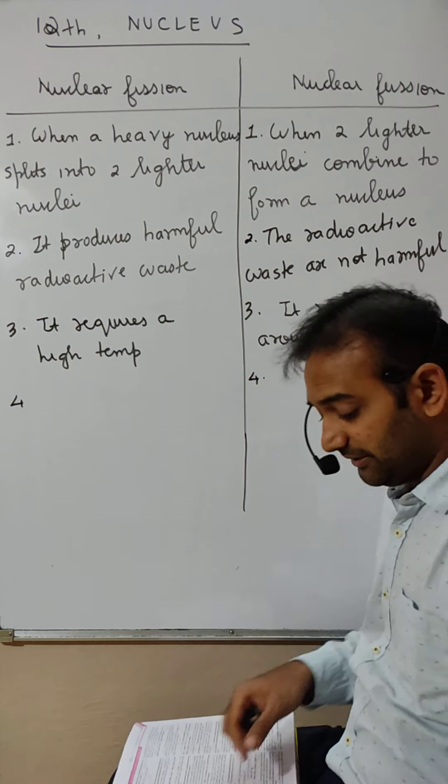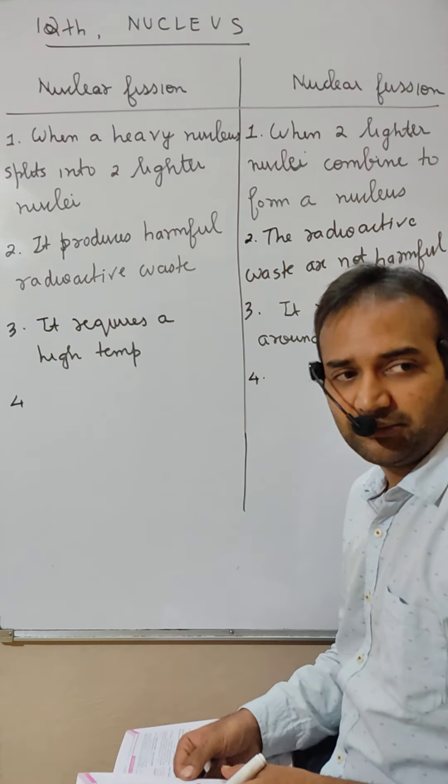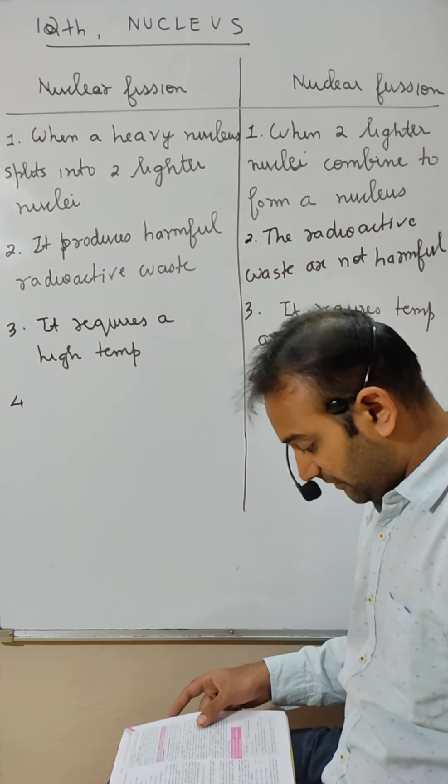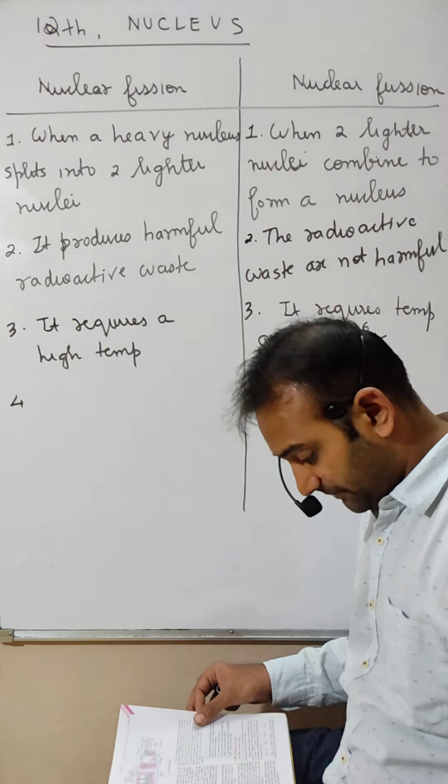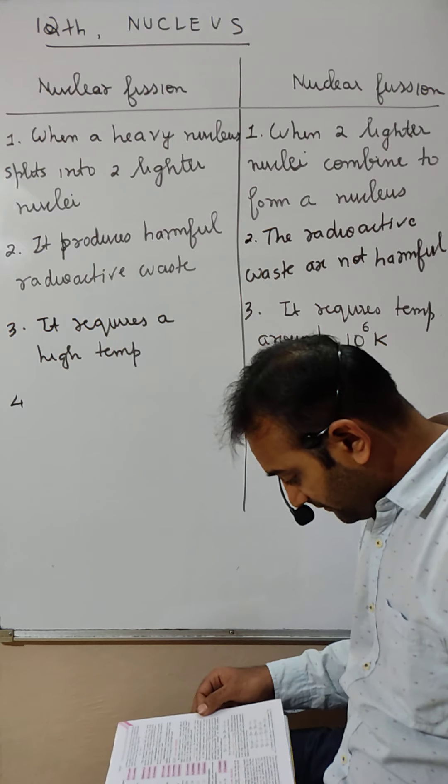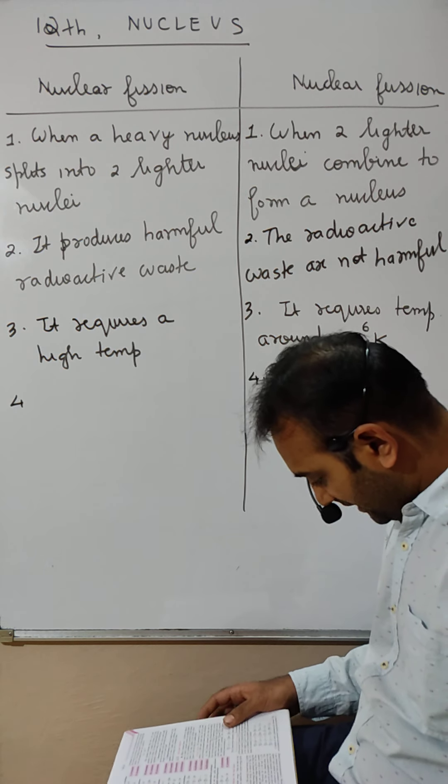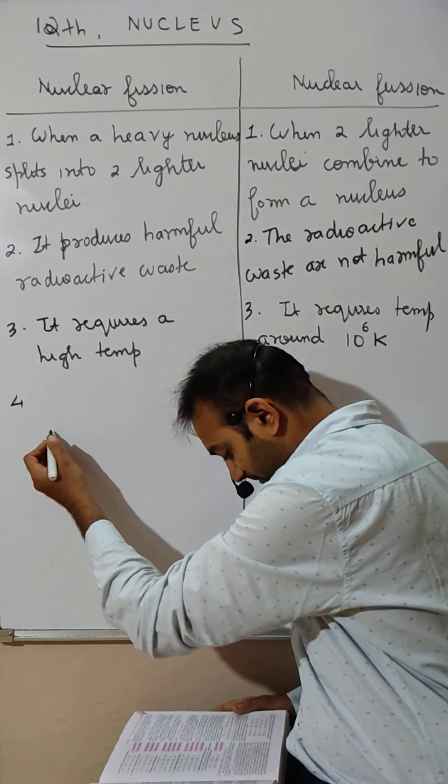One mark question example. We will try to know one mark example of fission and fusion. So here we will take one example of uranium splitting into krypton and barium. It is better you remember it.